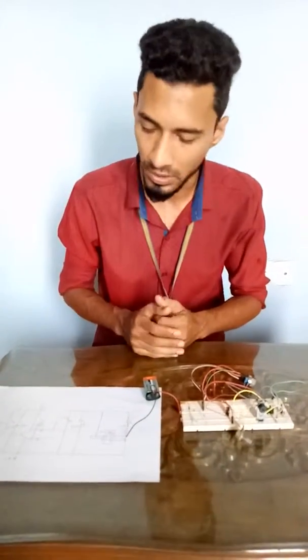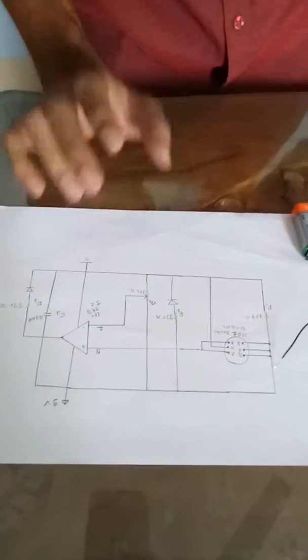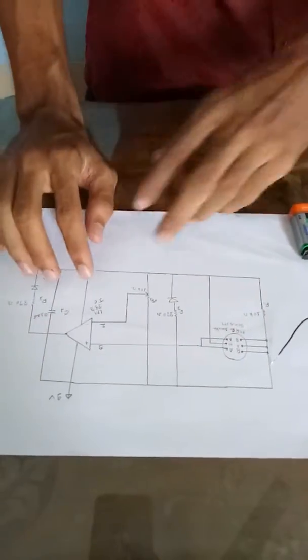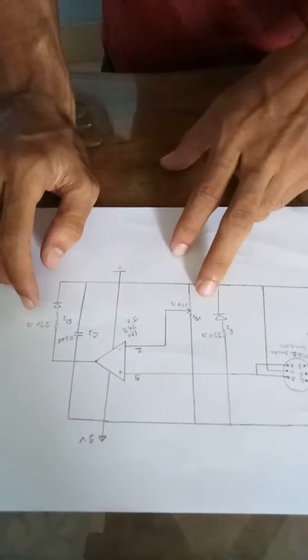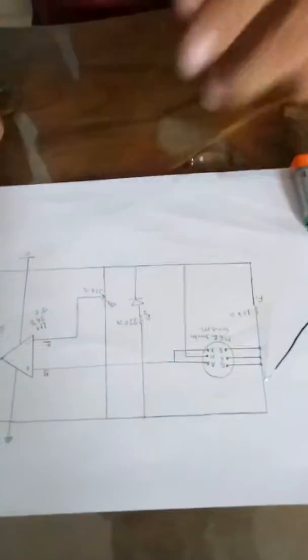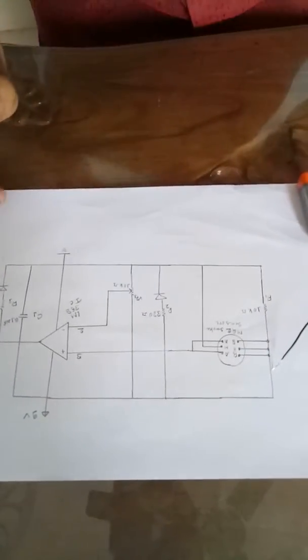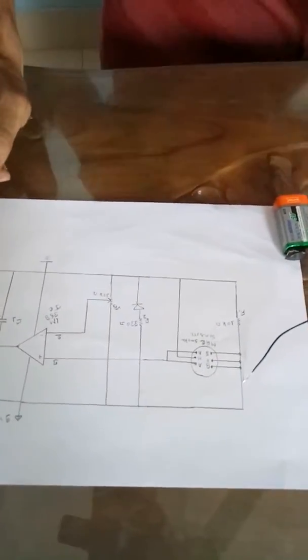Thank you to my previous group member. I am now explaining the circuit diagram. Here you can see we use an LM358 IC, a 330 ohm resistor, a 10 kilo-ohm variable resistor, a 0.1 microfarad ceramic capacitor, and a 9-volt battery.